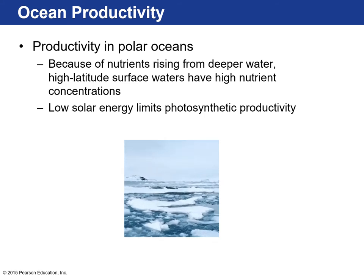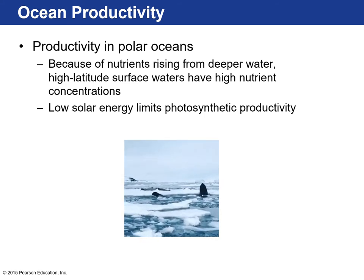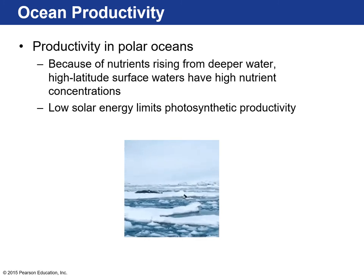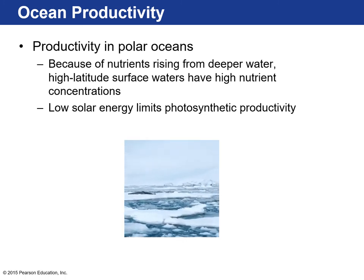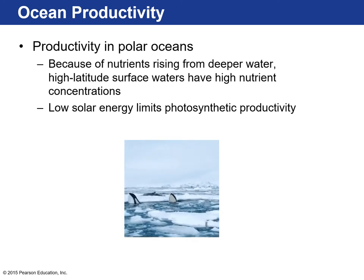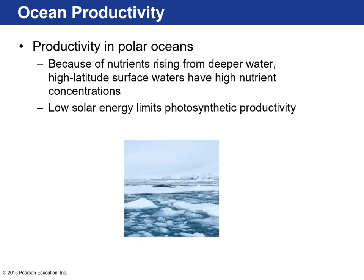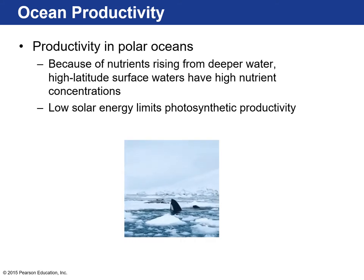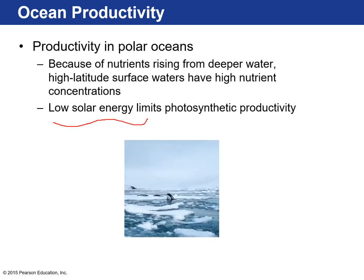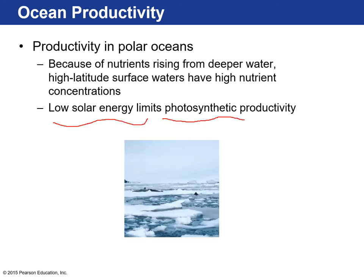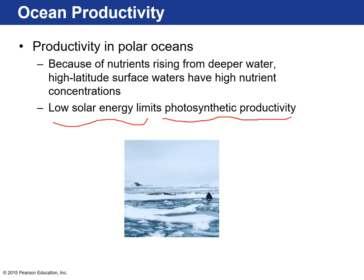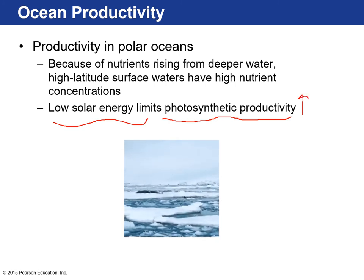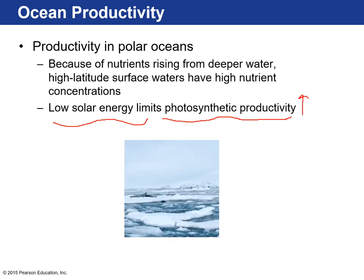Productivity in polar oceans is great because there are a lot of nutrients in the water — without a thermocline surface layer, nutrients make it up to the surface. The problem is that in winter when the pole faces away from the sun, lower solar energy means low photosynthetic productivity. But during polar summer, productivity is really high because nutrients are always there and then sunlight is added.